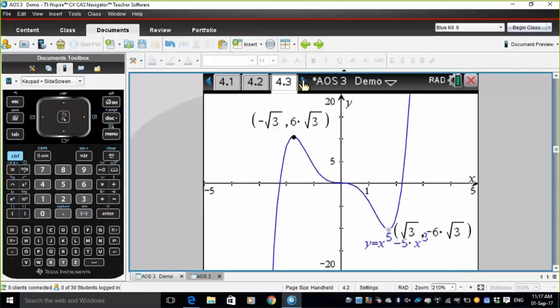We can also see this graphically on this graph here. So this is a graph of the function, y equals x to the fifth minus 5x cubed. And we've got a turning point at negative root three. Notice that we can get exact values on this graph. And also a turning point at x equals positive root three.